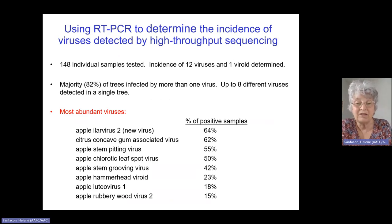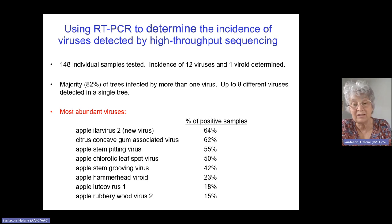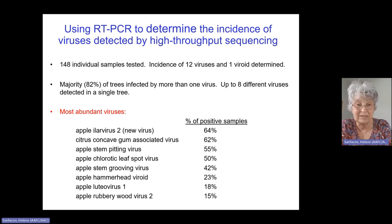We then used RT-PCR to look at the incidence of the different viruses detected by high-throughput sequencing. We tested 148 individual samples and looked at the incidence of the 12 main viruses and one viroid. What we found is that most of the trees were infected by at least one virus, whether the tree looked healthy or infected, and the majority of trees were infected by more than one virus.